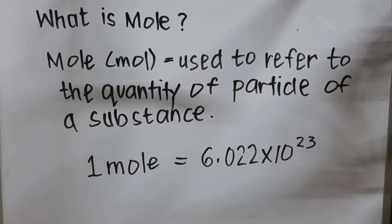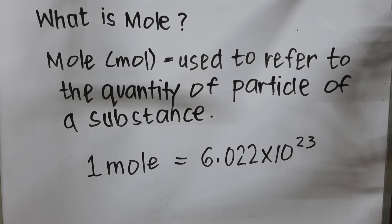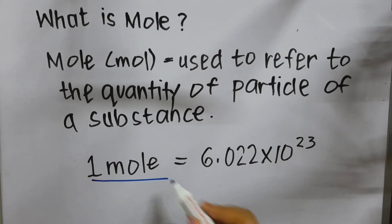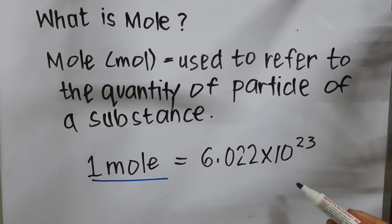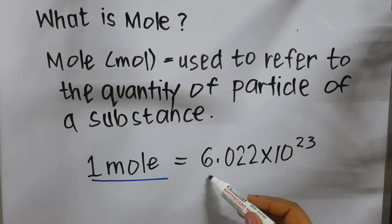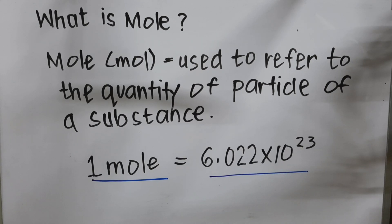What is a mole? Mole, or mol, is used to refer to the quantity of particles of a substance. Remember, in every 1 mole, we have an equal number of 6.022 times 10 raised to 23, which is Avogadro's number.